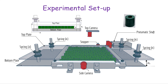To measure normal stress: there's a side camera. You know the spring constants holding the plate down. You push against it, measure the displacement, and that gives you the normal force. To get stress you can naively divide by cross-sectional area, or find all particles touching the plate and use that number.